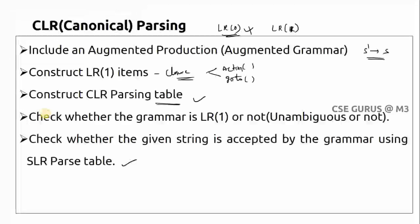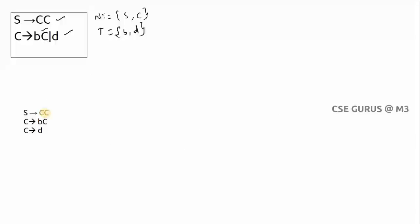The first step is to include an augmented production, creating an augmented grammar. The start symbol is S, so on the left side we introduce a new non-terminal S'. The augmented production is S' → S. Now we have the augmented grammar, and we place dots at the extreme leftmost position on the right-hand side of each production.